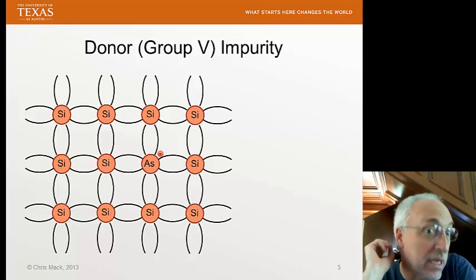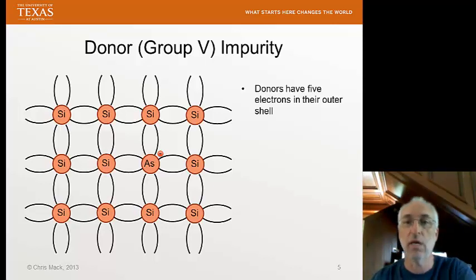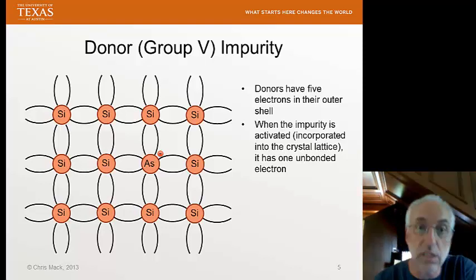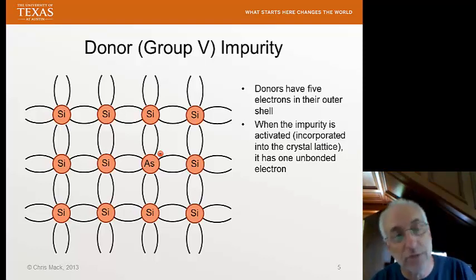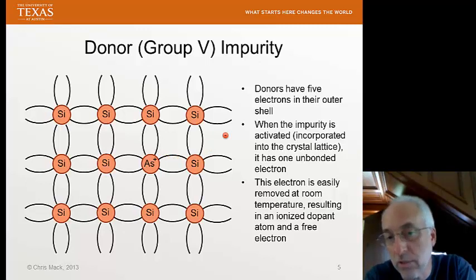Now, what happens if we incorporate a dopant, an impurity atom, into the crystal structure? We'll pick a donor. This is a group 5 material. Group 5 means it has five electrons in its outer shell. When it's incorporated into the crystal structure, four of those electrons are being used in the bonds with the neighboring silicon. That leaves one electron left over. This left over electron is unbonded. As such, it is very easy to remove it from the arsenic. Arsenic in the example shown here could be some of the other group 5 materials that would work the same way.